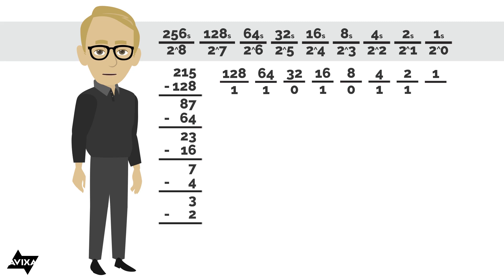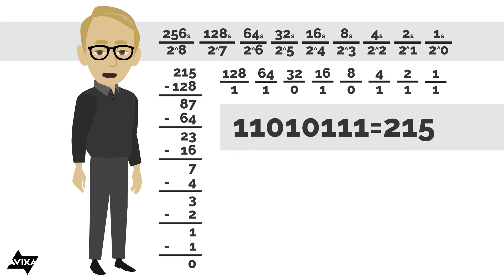So 2 will fit into 3, so I can use something in the 2's place. Take 2 away from 3, that leaves me 1. Take 1 away from 1, the remainder is 0. So that completes that. So 215 in base 10, or the decimal system, if we were to represent this in base 2 or binary, would be 1, 1, 0, 1, 0, 1, 1, 1. This is saying 128 plus 64 plus 0 plus 16 plus 0 plus 4 plus 2 plus 1 is 215 in decimal.